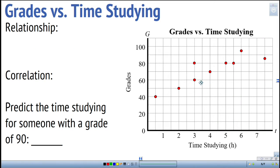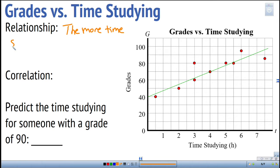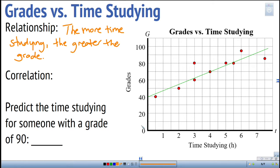Let's look at more data relating grades and time spent studying. The dots are going upwards, so I'll draw a line of best fit. The relationship is that the more hours you study, the higher the grade. Since both variables increase together, that's a positive correlation.